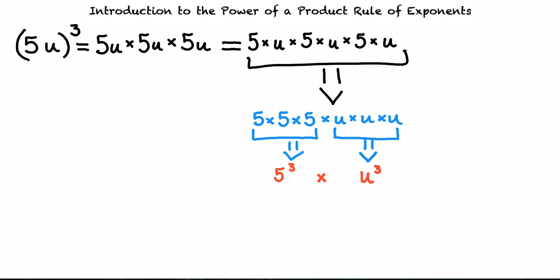So to summarize what we just did, we found out that 5u to the power of 3 equals 5 to the power of 3 times u to the power of 3. But we can simplify 5 cubed even more, right? Because 5 cubed is 125. That's right. So our final answer would be 125u to the power of 3.